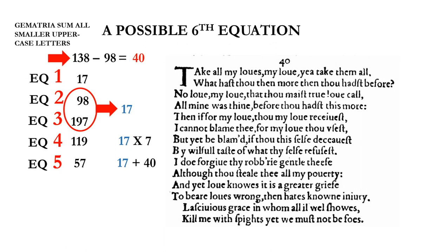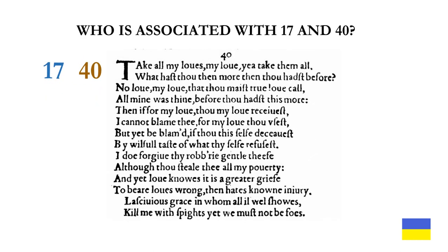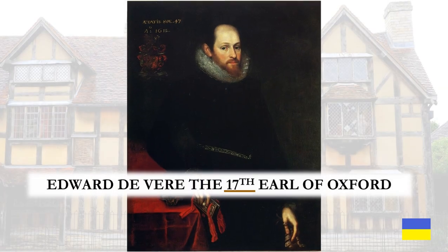Equation 6: we get the gematria sum of all the smaller uppercase letters and subtract from that the solution to equation 2 to get 40. Here are the Romeo and Juliet solutions: 17 and 197. Once again, we ask: who is associated with 17 and 40? Edward de Vere, the 17th Earl of Oxford.